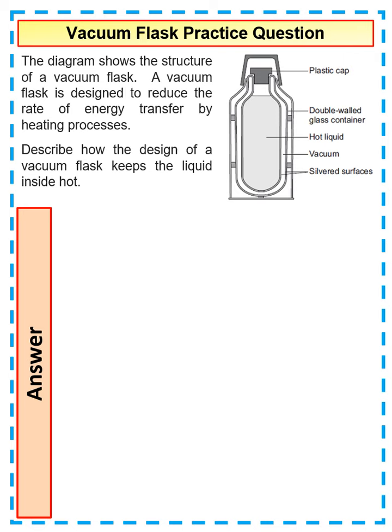So this is just a quick question on how vacuum flasks reduce heat loss by conduction, convection and radiation. The diagram shows the structure of a vacuum flask. They've shown you the diagram which contains a number of features.